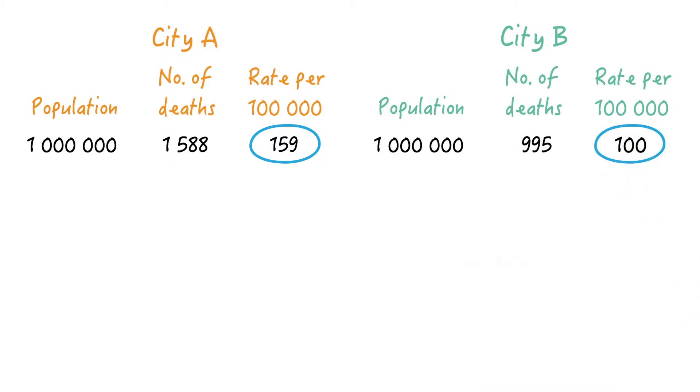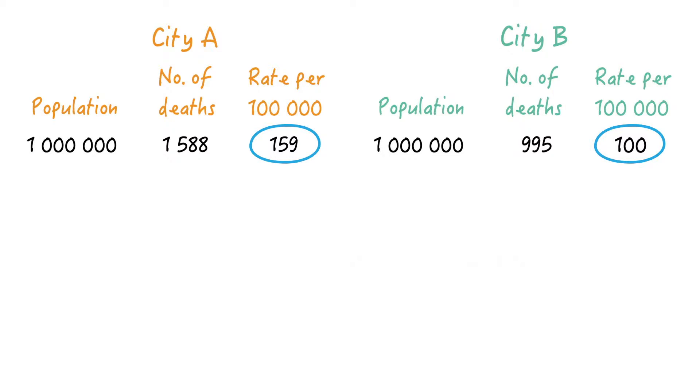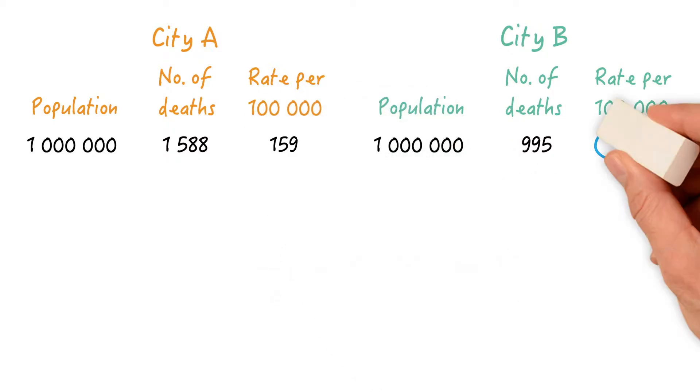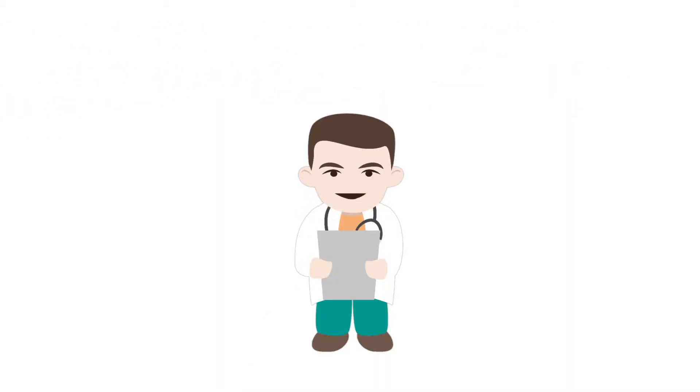In other words, the risk of death seems to be much higher in City A. But this calculation does not factor in the age distribution of both cities.